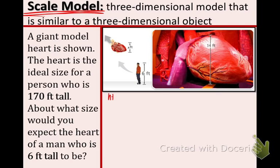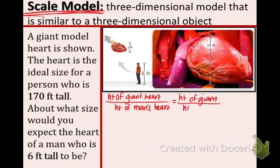So, let's set up this proportion. Height of giant heart over height of man's heart equals height of giant over height of man. As you can see, the top part of both sides of the proportion is about the giant and the bottom part is about the man. So, you need to make sure you keep that format.